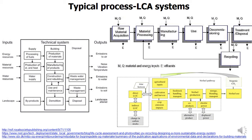A similar finding applies to process LCA, where we combine processes to form the value chains of commodities or services, and there is no alternation between markets and industries. So here also no bipartite system structure prevails.